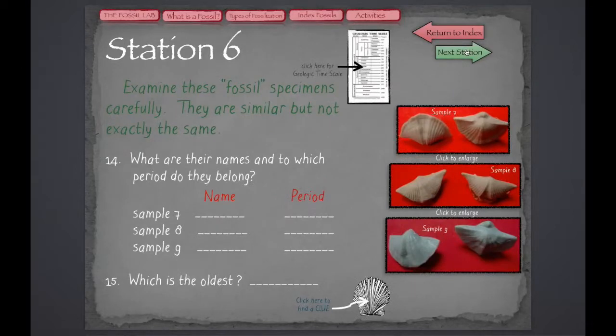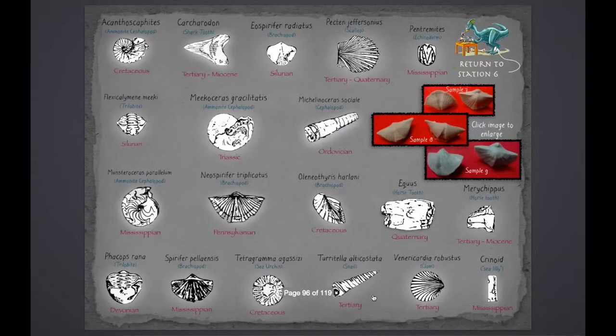At Station 6, we see three different species of brachiopods. Now, this can be very challenging to distinguish these species, even from a list of clues.